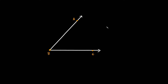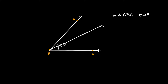We have angle ABC, let's say this is about 60 degrees, so the measure of angle ABC is equal to 60 degrees. If you cut this angle with a ray or a line, we can name this point X. Now we have two angles: angle ABX and angle XBC. We don't know exactly what the measure of either one is, but when we add them up they equal the original 60 degrees.